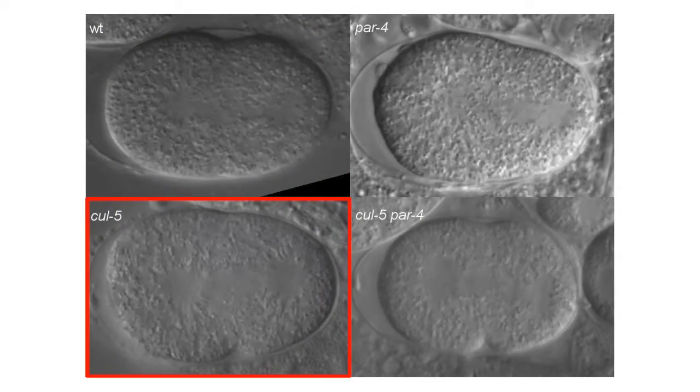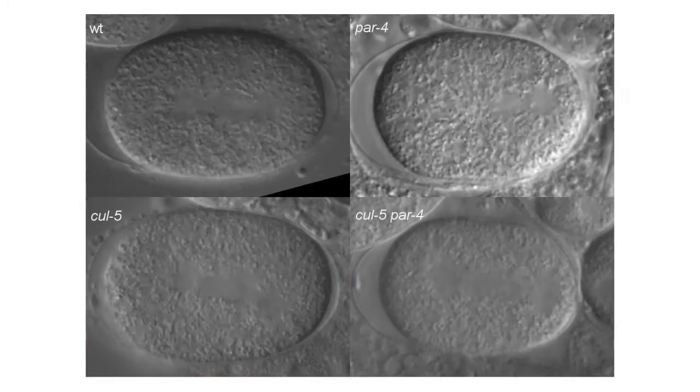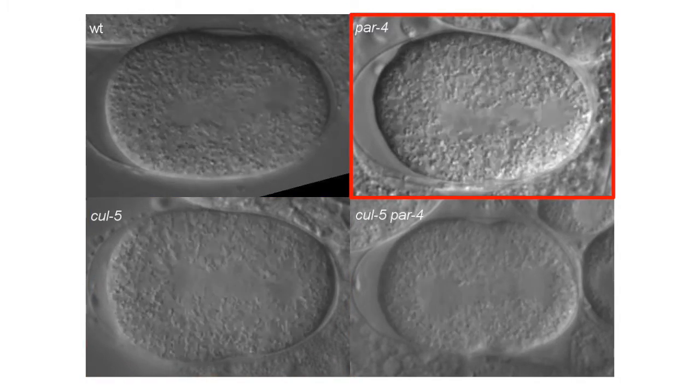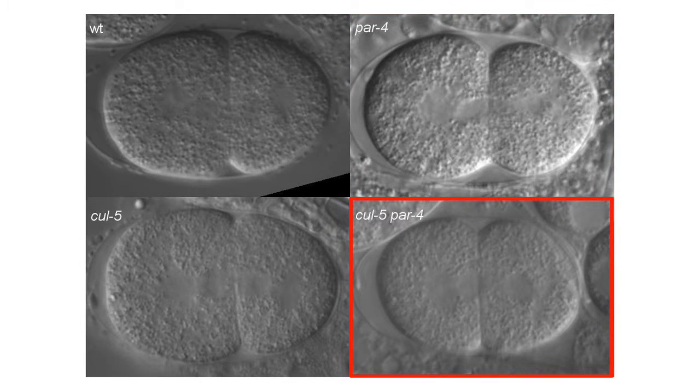CULIN5 single mutants divided just like wild type embryos. In PAR4 mutants, however, the cleavage furrow was slightly shifted towards the anterior, and in CUL5 par4 double mutants this shift became much more pronounced.